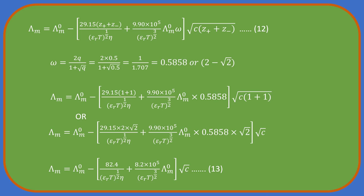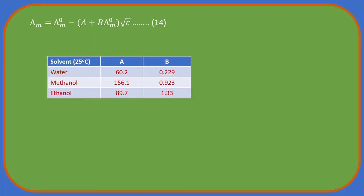Equations 12, 13, and 14 are different forms of the Debye-Huckel-Onsager equation. For water at 25 degrees Celsius, A equals 60.2 and B equals 0.229. For methanol these values are 156.1 and 0.923 respectively. Onsager equation shows that molar conductivity is a linear function of the square root of concentration. Hence a plot of lambda M against square root C must be a straight line. This provides the validity of Debye-Huckel-Onsager equation. Remember, equation 14 is valid for a uni-univalent electrolyte only.